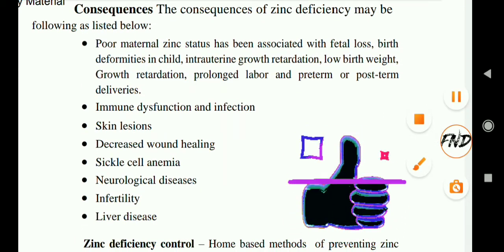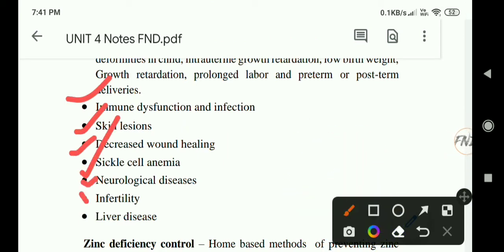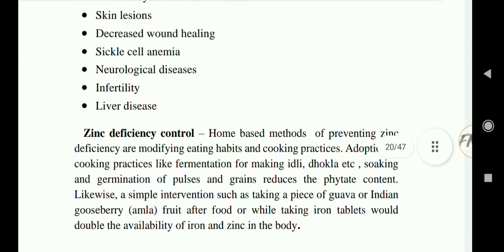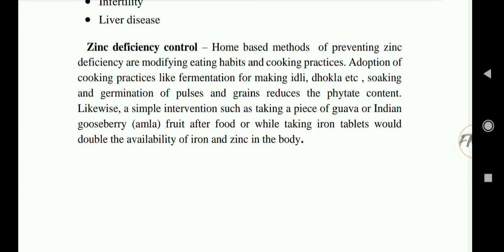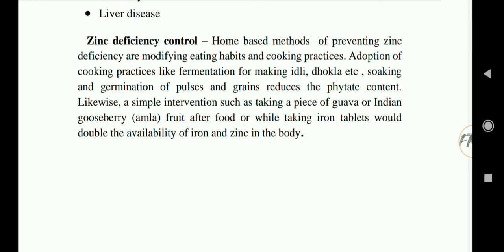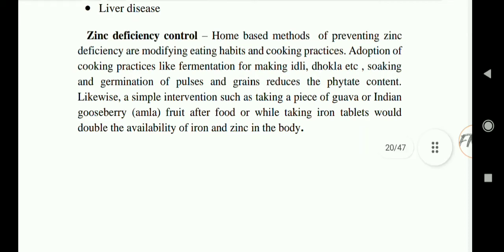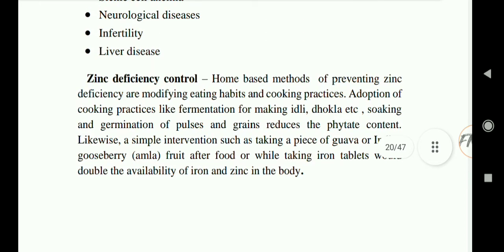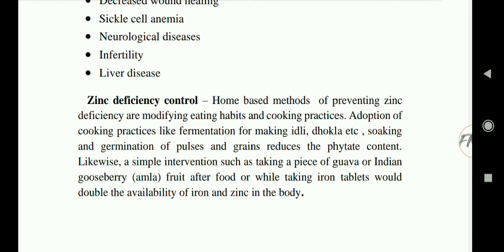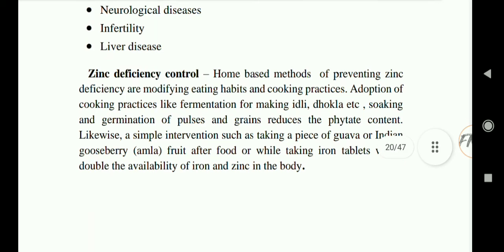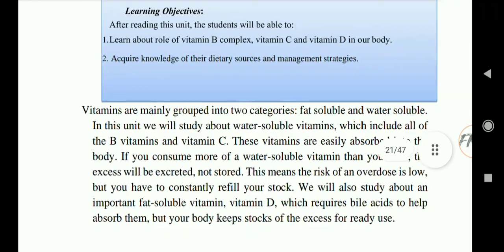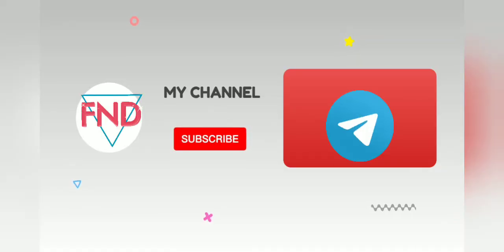To prevent zinc deficiency, one should take a proper diet including all essential minerals. Home-based methods of preventing zinc deficiency include modifying eating habits and cooking practices. Cooking practices like fermentation — making idli, dhokla etc. — and soaking and germination of pulses and grains reduce the phytate content. A simple intervention such as taking a piece of Indian gooseberry (amla) after food or while taking iron tablets would double the absorption of iron or zinc in the body. Please subscribe to our channel, join the Telegram group, and like the video. Thanks for watching.